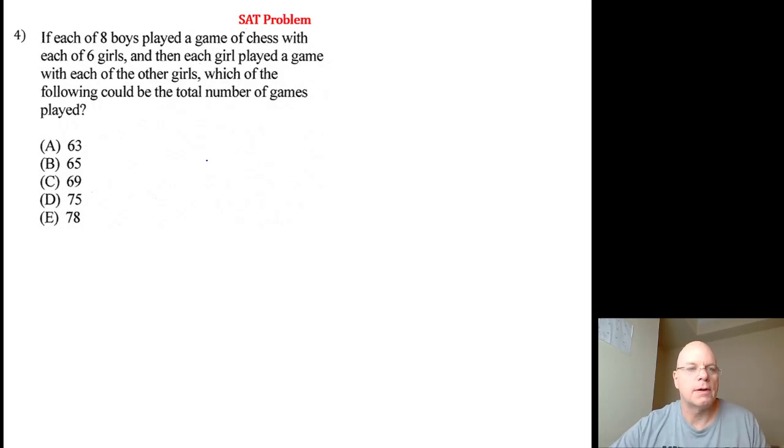The answer to number four is 63. If each of eight boys played a game of chess with each of six girls, and then each girl played a game with each of the other girls, which of the following could be the total number of games played?